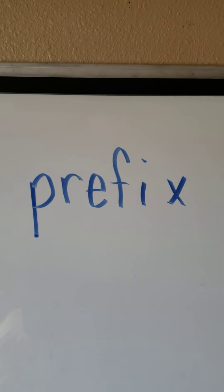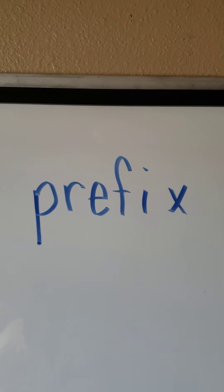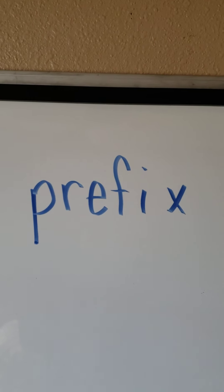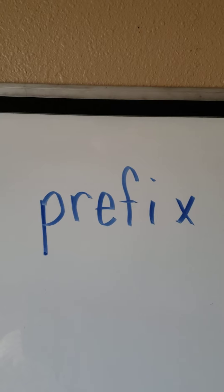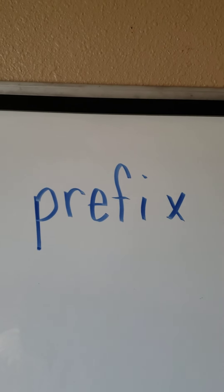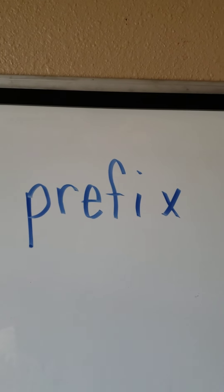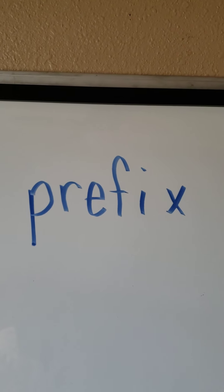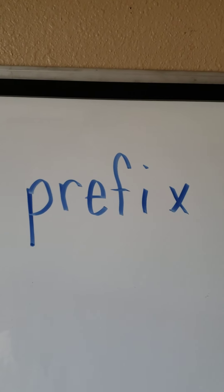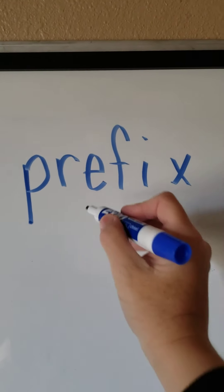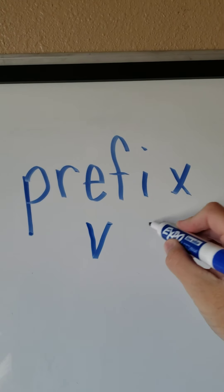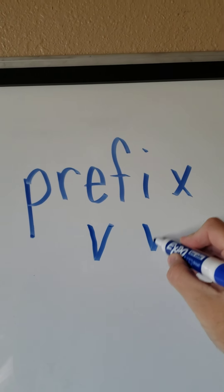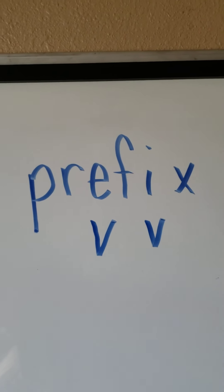Hey friends, it's time for syllable vacation. Here's our first word — we're going to do two words today. The very first step is that we find the vowels. E is a vowel and I is a vowel.